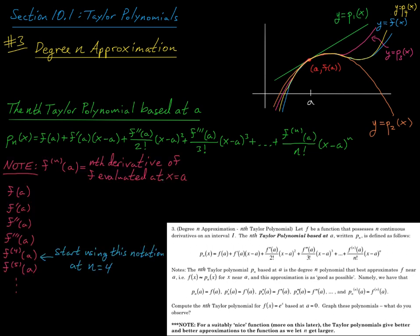A note on the notation: the superscript n here is not an exponent — this expression indicates the nth derivative of f evaluated at a. For the first three derivatives we use primes, but by the fourth derivative and higher those primes start to blur together, so it's nicer to use this notation that clearly indicates which derivative you're looking at.